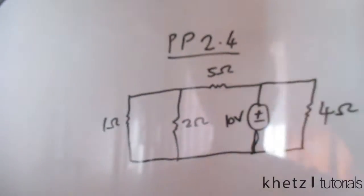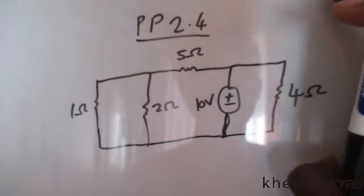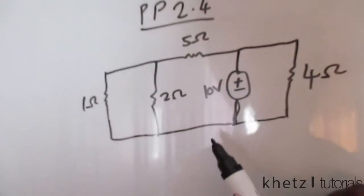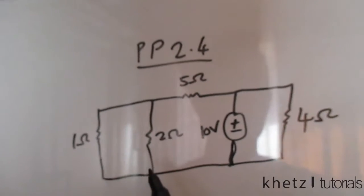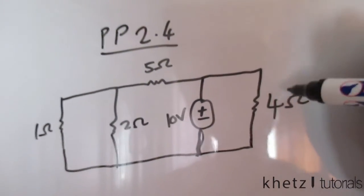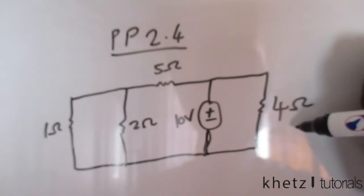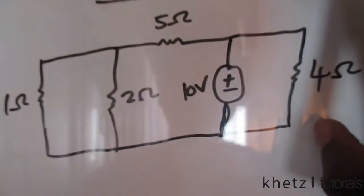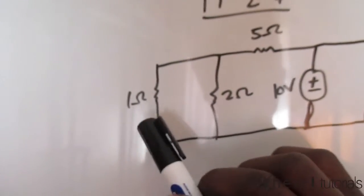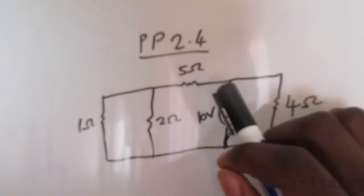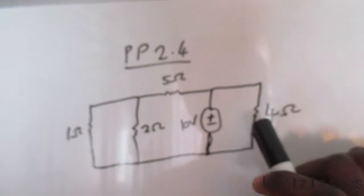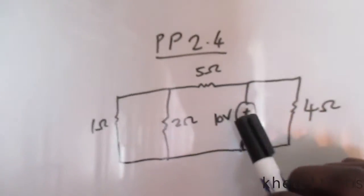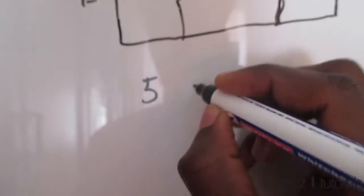Welcome to CATS Tutorials. In this video we're going to be doing practice problem 2.4. The question asks how many branches and nodes does the circuit have. A branch is simply an element in the circuit — an electrical component. Looking at this circuit there's a resistor, another resistor, another resistor, a voltage source, and another resistor. If you just count: one, two, three, four, five — the answer is five branches.